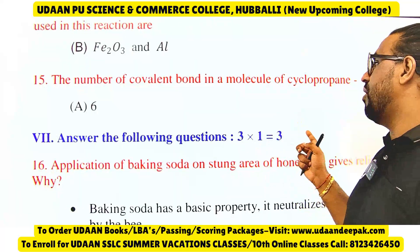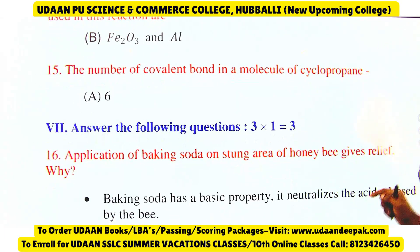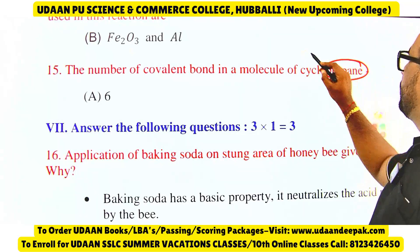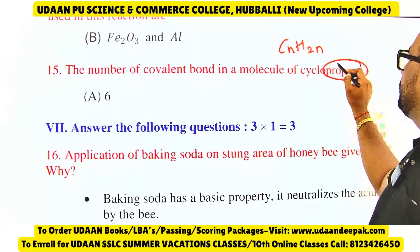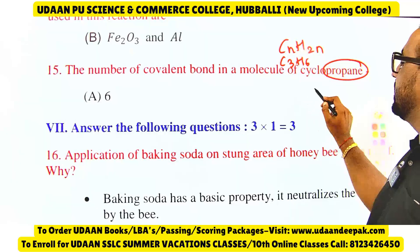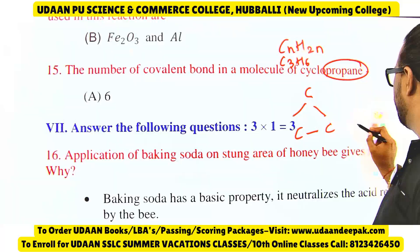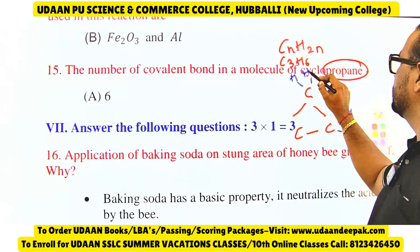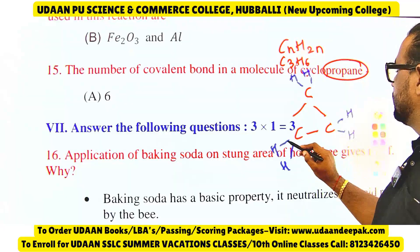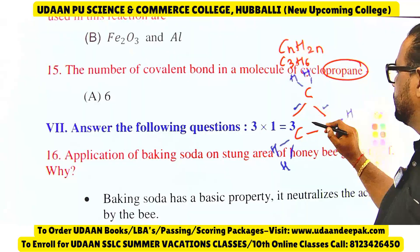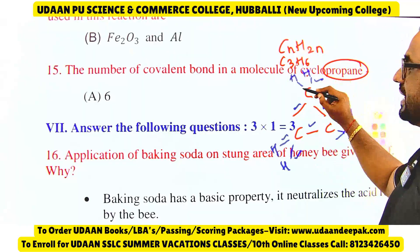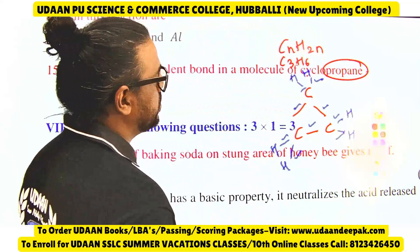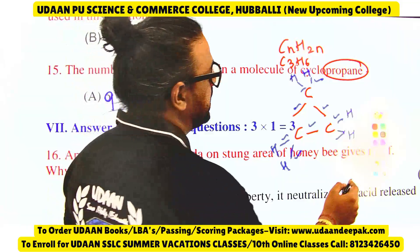The number of covalent bonds present in cyclopropane: the formula for cyclopropane is C3H6. In the cyclic structure, counting all bonds — carbon-carbon and carbon-hydrogen — the total number of covalent bonds is 9. So the right answer is 9, not 6.